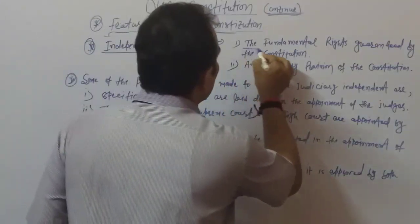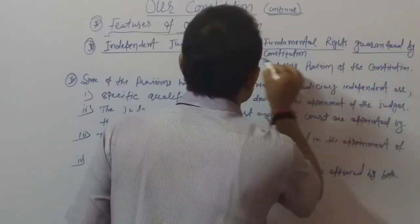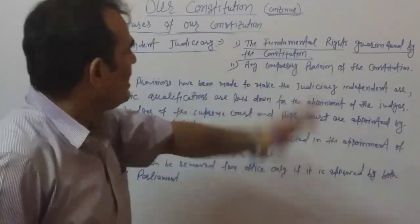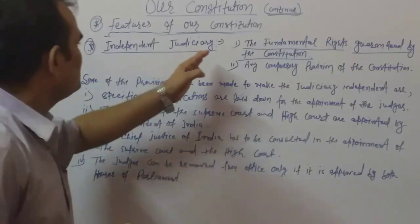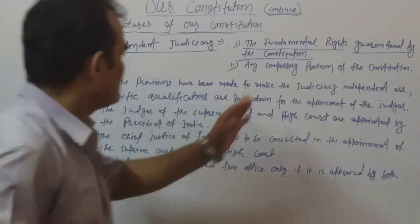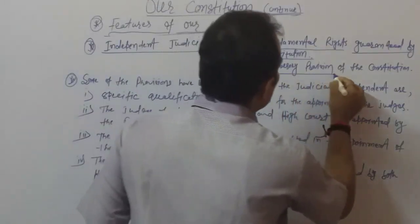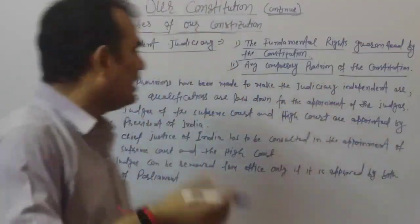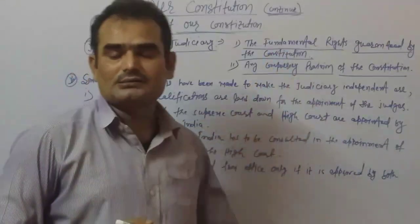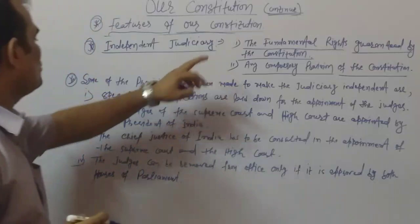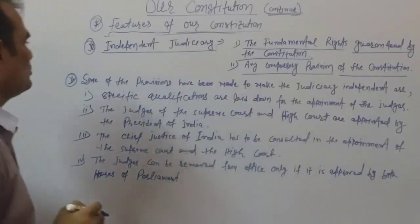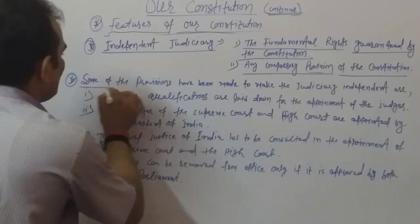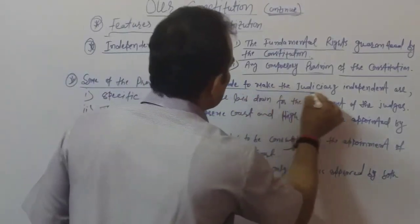A law can be declared unconstitutional if it is against the fundamental rights granted by the constitution, or if it is against any compulsory provision of the constitution. Provisions have been made to keep the judiciary independent.